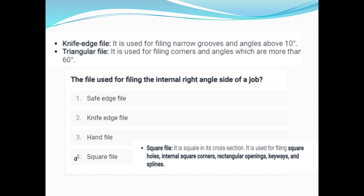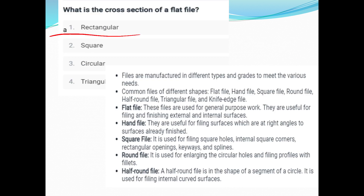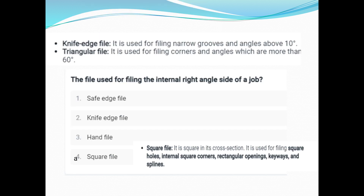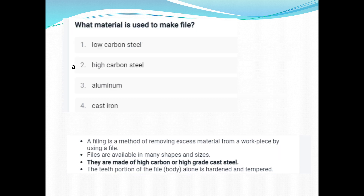The triangular file is used for filing internal right-angle sides of a job. The square file is used for internal square holes, rectangular openings, key-ways, and splines. Files are made of high carbon or high grade cast steel, and are available in many shapes and sizes.